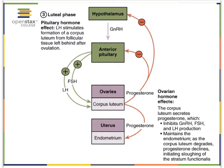After ovulation, the corpus luteum is formed so that we can start the luteal phase. During the luteal phase, the corpus luteum is going to produce estrogen and inhibin, but especially progesterone. Progesterone is going to help with preparing the uterus for the possible arrival of an embryo. The progesterone will also feed back to the anterior pituitary and the hypothalamus so that no more FSH and LH is being released. So estrogen, progesterone, and inhibin have a negative impact on further release of FSH and LH.